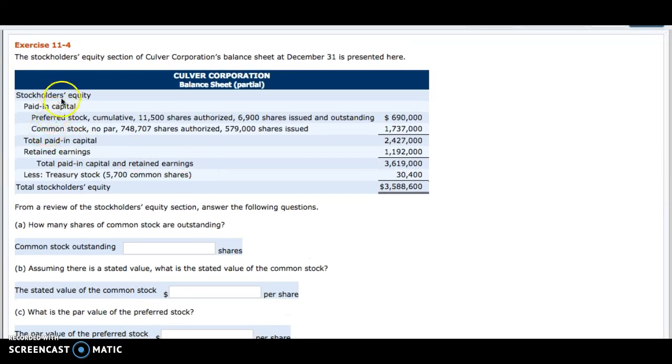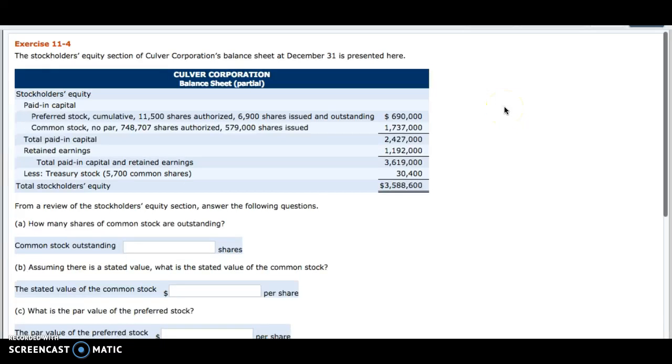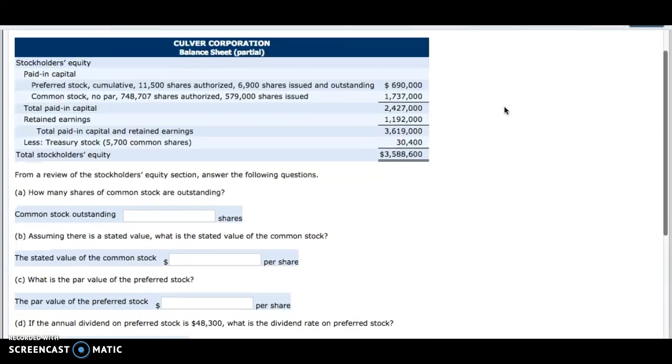So what's going on here is we've been given the stockholders' equity section of Culver Corporation's balance sheet as of December 31st. We've been given some information about the different types of stock that they have issued, and then we are asked some questions about these.